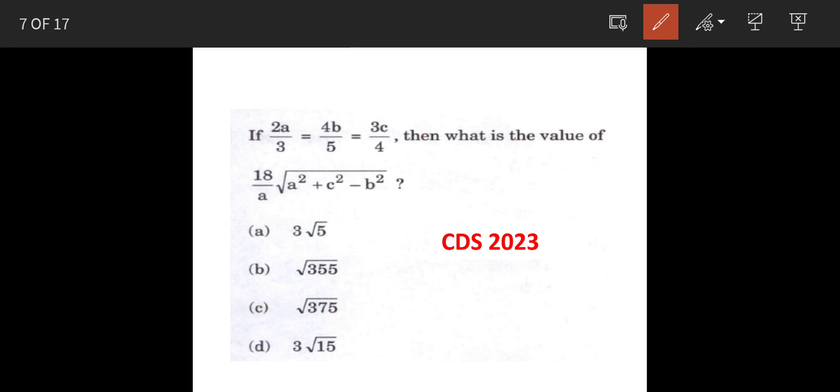So, in the question, it is given that if 2a by 3 is equal to 4b by 5 is equal to 3c by 4, then what is the value of this equation?